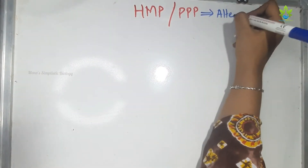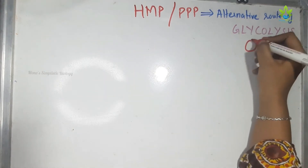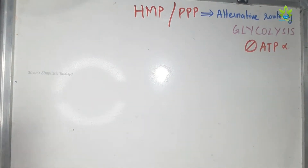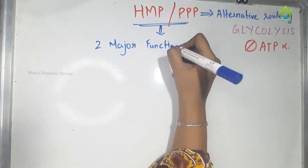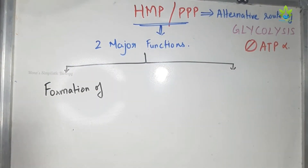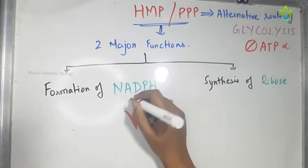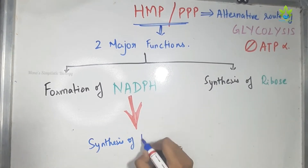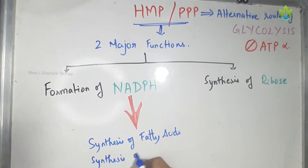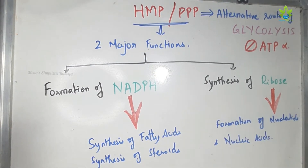So what is this pathway? There is glycolysis, which usually produces ATP, but in this HMP shunt there are two major functions. One is the formation of NADPH, which is used for synthesis of fatty acids and steroids. The other is the synthesis of ribose, which is used for the formation of nucleotides and nucleic acids.